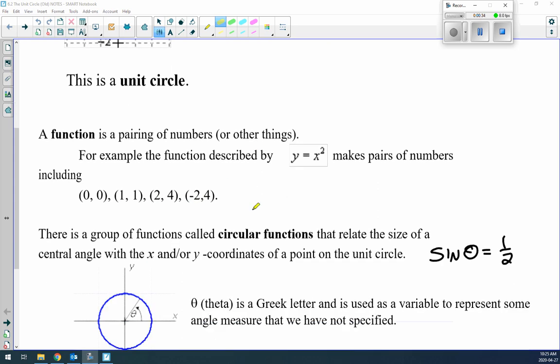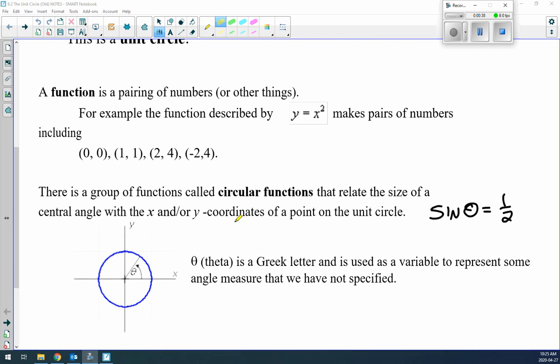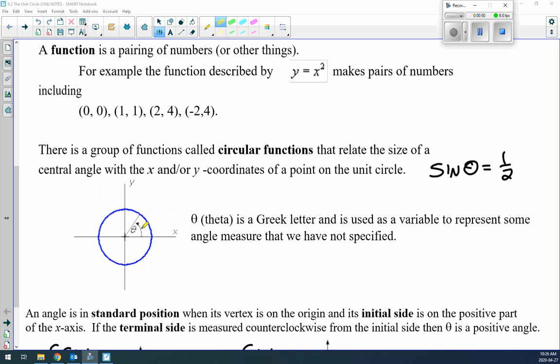There's a group of functions called circular functions that relates the size of the central angle and the x and y coordinates on a unit circle. You'll see something like sine theta equals 1/2. We know sine is opposite over hypotenuse or y over r. Theta is a Greek letter that represents the angle measured that we have not specified.